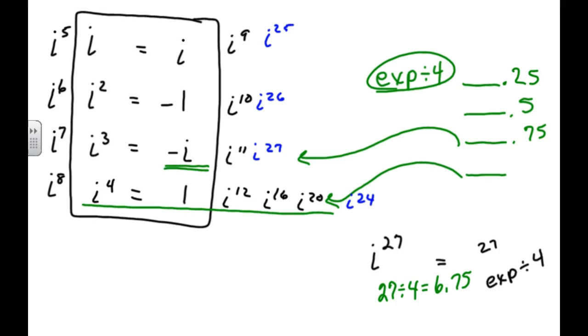If your decimal part is .5, your answer is negative 1. And if your decimal part, when you divide, is .25, then your answer is i.